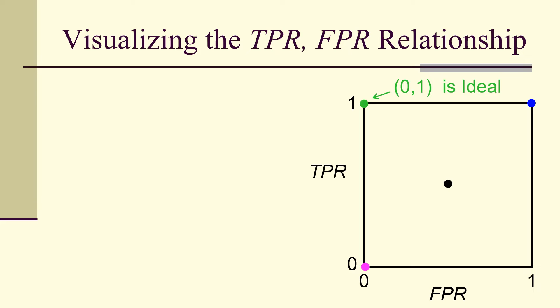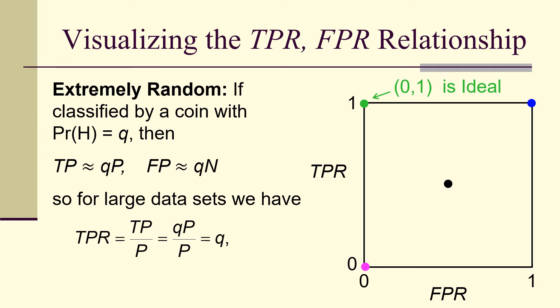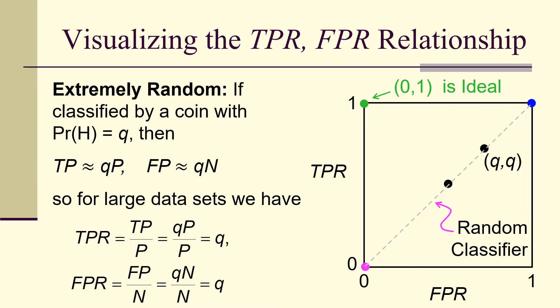Now consider a more general random classifier using a biased coin with probability of heads Q. The true positives are Q times the positives, and the false positives are Q times the negatives, so with large datasets the true positive rate equals Q and the false positive rate equals Q. This gives the point (Q, Q) — for example, Q = 0.25 or Q = 0.9 — and these points form a line between the two corners of the unit square.